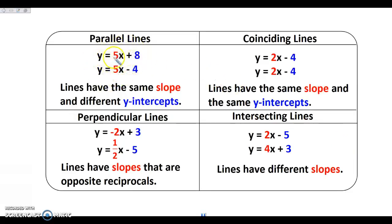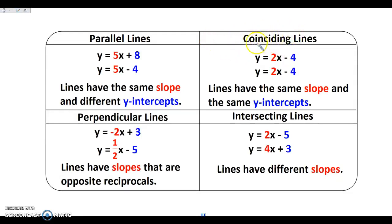Parallel lines — our slopes are going to be the same. All of these equations are in slope-intercept form, so y = 5x + 8 and y = 5x − 4. The key is that they have the same slope — m is the same — but their intercepts are different. If they had the same slope and the same y-intercept, they would be the same line, which we call coinciding lines. So same slope with different y-intercepts gives us parallel, and same slope with same y-intercept gives us coinciding lines.